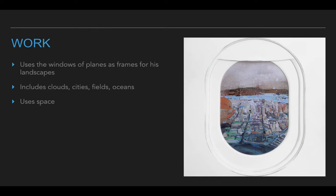We'll be sure to draw that window frame in our artwork today, as well as start on a landscape. In his paintings, we'll often see that he includes clouds. He might do a picture of a city, a field, or an ocean — pretty much anything he's seen looking out his window. This one here is an example of a city. You can see there's a big baseball stadium right here, some skyscrapers, and a big bridge over here.